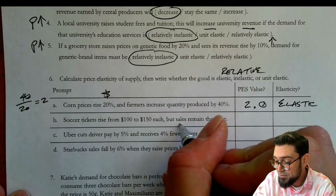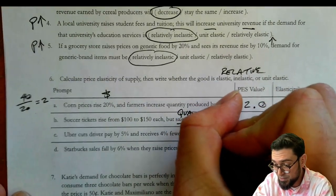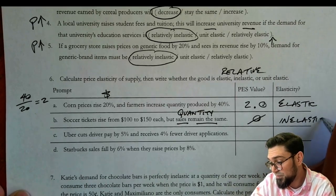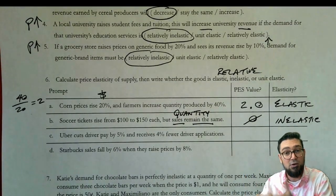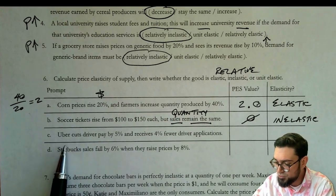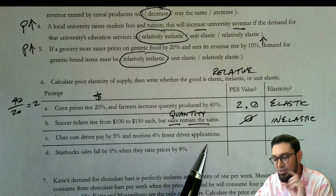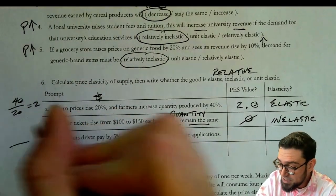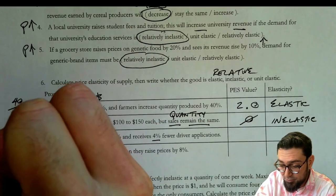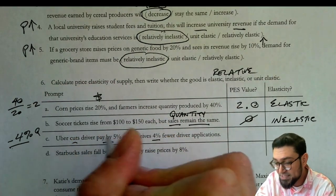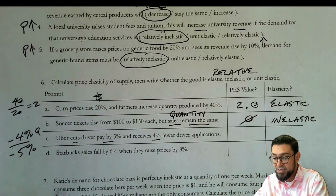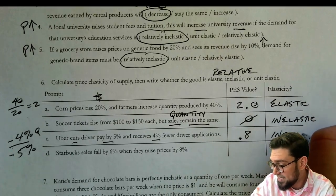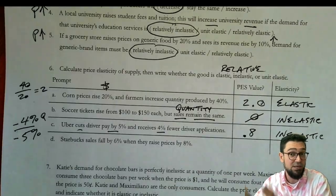Part B: soccer tickets rise from $1.00 to $2.50 and sales remain the same. If I know that the quantity of sales didn't change, then I actually know that it's perfectly inelastic — the elasticity is zero — because there is no change in quantity as a result of that 50% increase in ticket price. Part C: Uber drivers see a pay cut of 5% and receive 4% fewer driver applications. The quantity of drivers willing to work goes down by 4% when the price paid is cut by 5%, so that's 4 over 5, which is 0.8 — relatively inelastic. So B is perfectly inelastic and C is just relatively inelastic.